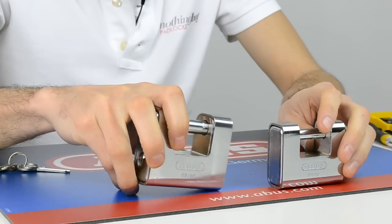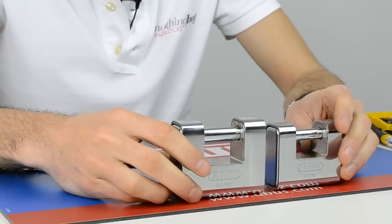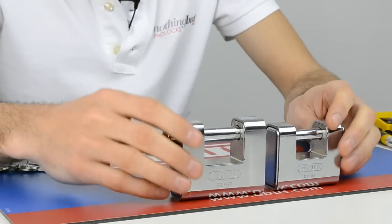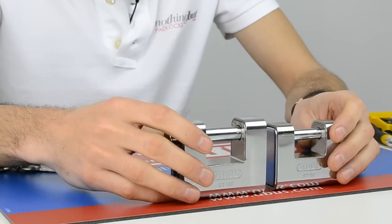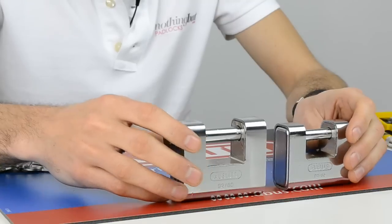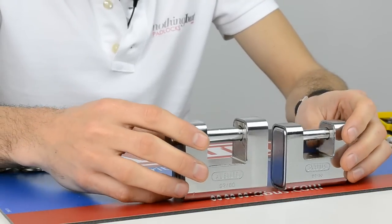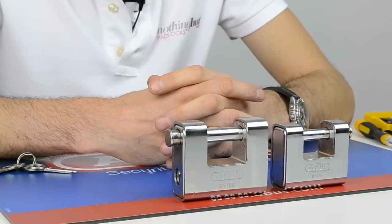Now these are, by their nature, regarded as a closed shackle padlock because you can see that there is a very restricted area for cutters to get in there once it's actually on a loop or a chain or a hasp and staple. There's a very limited area in which you can get in there.